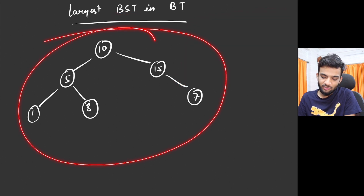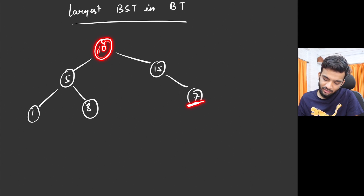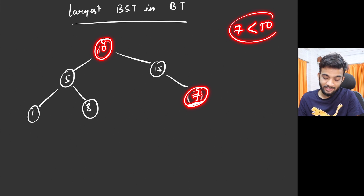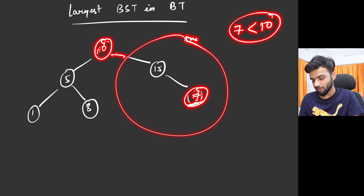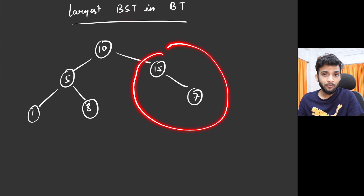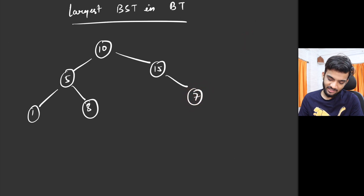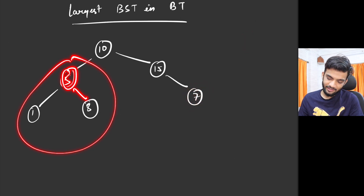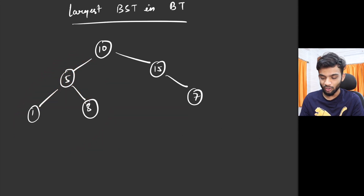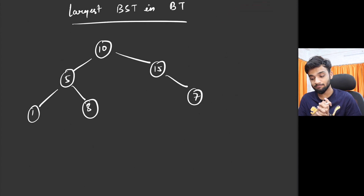Given this binary tree, is it a BST? The answer is no, because if you see this 10, there is something on the right which is 7 — 7 is smaller than 10, and that's not allowed. So which is the largest BST? The node 5 itself is a BST of size 1, and the subtree rooted at 5 with its children forms a BST of size 3. That size is what they want you to return.